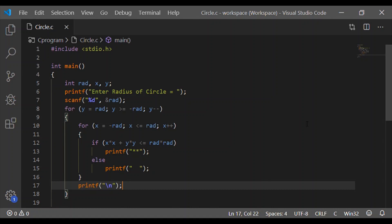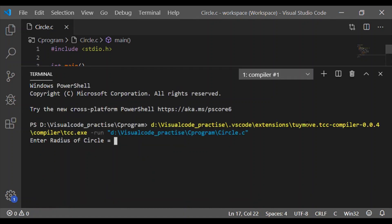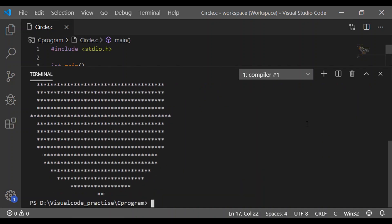Now on execution let me give the radius of the circle as 10, and the output that we could see in the terminal is more or less the filled-in circle with the star pattern.